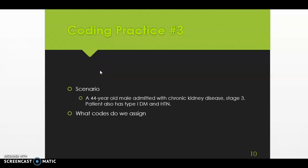Our patient is a 44-year-old male admitted with chronic kidney disease stage 3. Our patient also has type 1 diabetes mellitus and hypertension. So we don't have a procedure to code here, just diagnoses. There's multiple. So I'll give you just a minute and then we'll go over the codes.